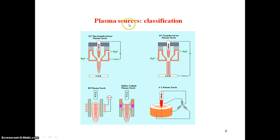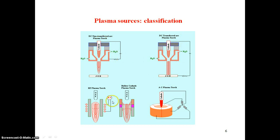Here are the various types of plasma sources or plasma torches: the DC non-transferred plasma torch, the transferred plasma torch where the arc is transferred — making the difference between non-transferred arc and transferred arc — the RF torch, the Halakatha torch, and the AC plasma torch.